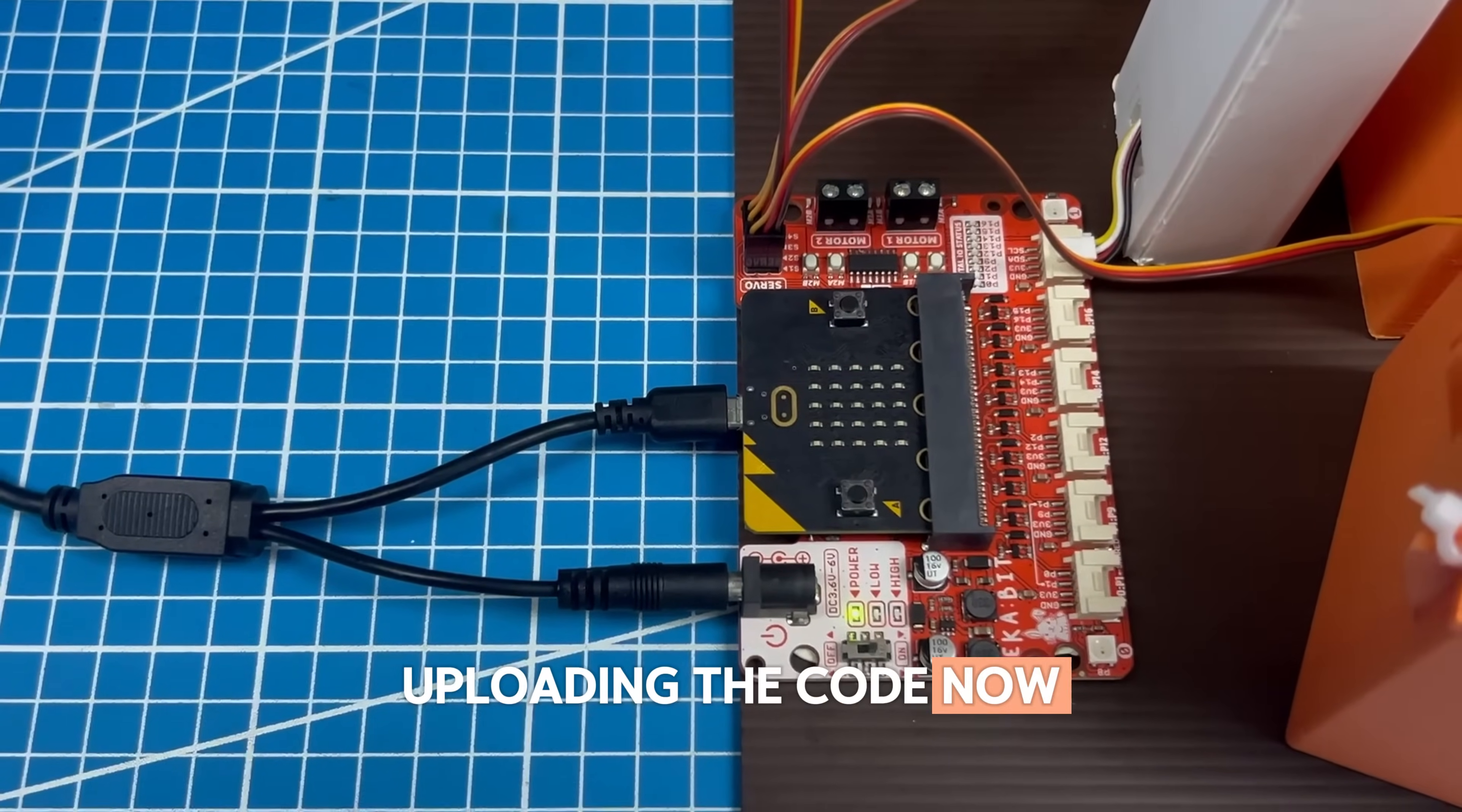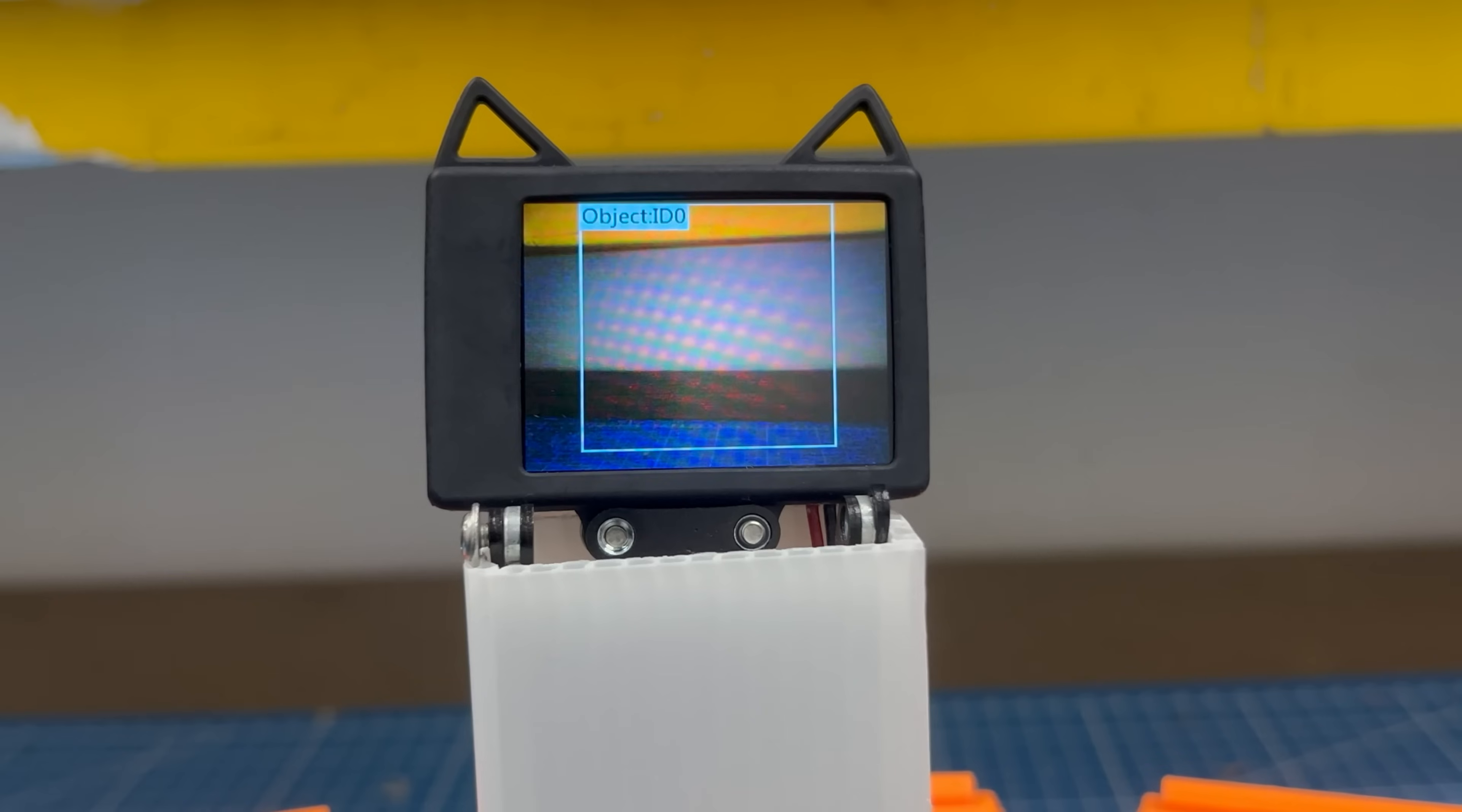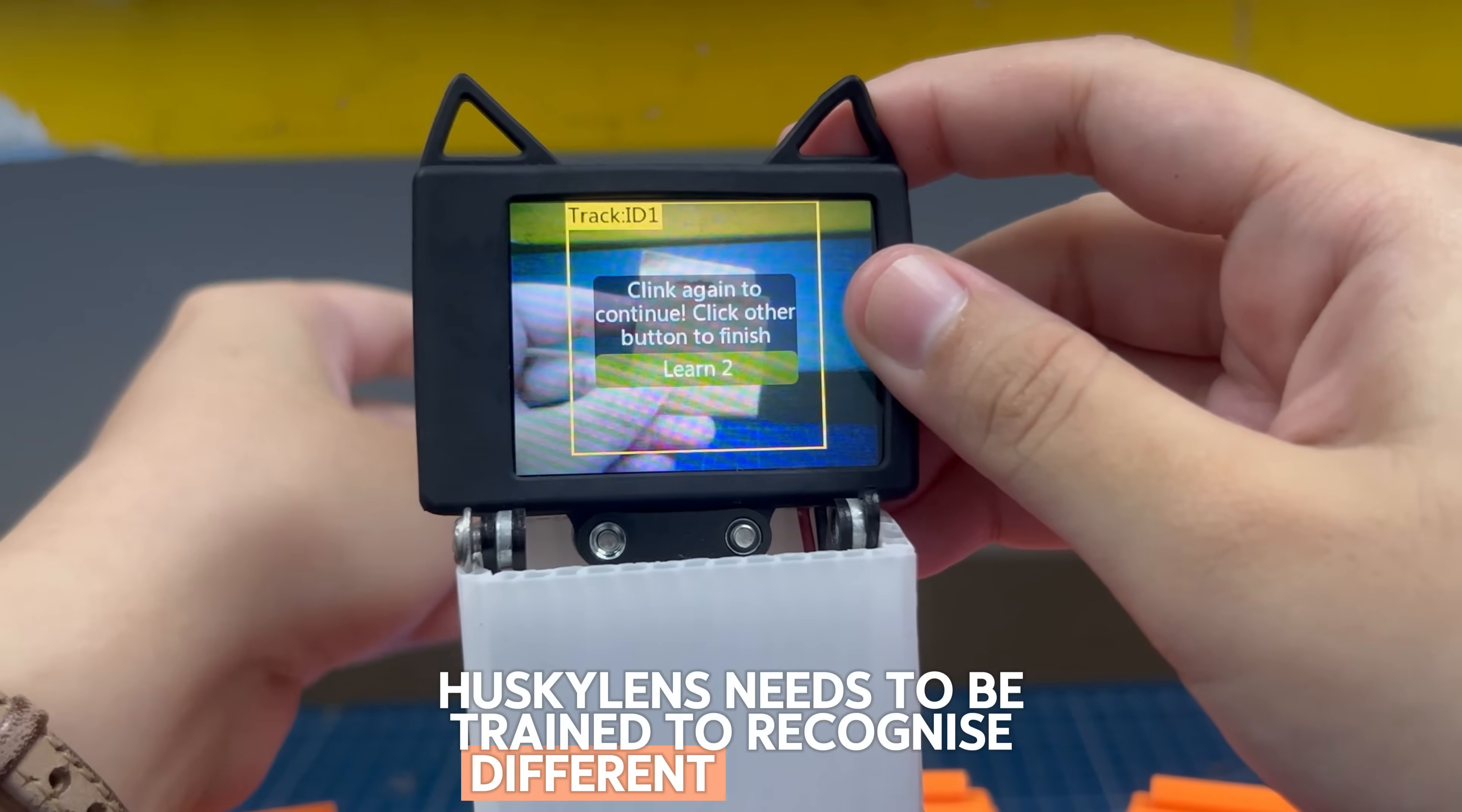Uploading the code now, let's test the system's response. To sort waste accurately, Huskalyn's needs to be trained to recognize different materials.